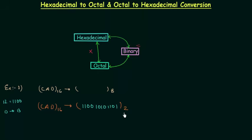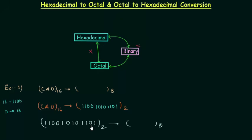We will convert the binary number 110010101101 to octal. For binary to octal conversion we make groups of 3 bits, starting from the right. We form the first group, the second group, the third group, and the fourth group.